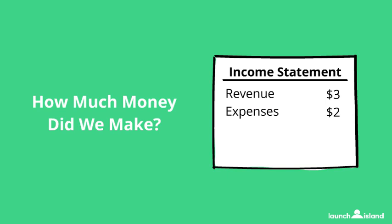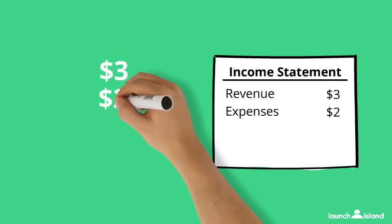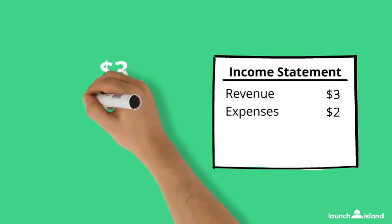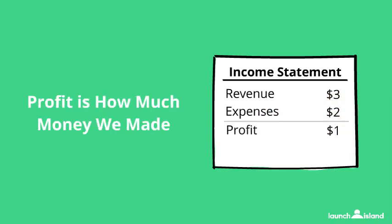So how much money did we make? We got $3 from selling our candy, but we had to pay $2 for our sugar. That's just $3 minus $2, so we have $1 left. That's called profit. Profit is just how much money you have left over after all your costs.